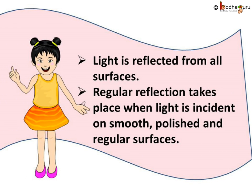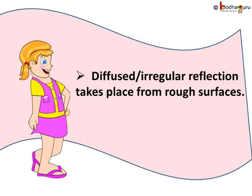So, to sum up what we learnt today: light is reflected from all surfaces. Regular reflection takes place when the light is incident on smooth, polished and regular surfaces. Whereas, diffused or irregular reflection takes place from rough surfaces. In both kinds of reflection, whether diffused or regular, the laws of reflection hold true.